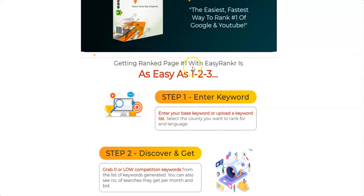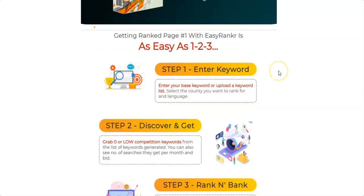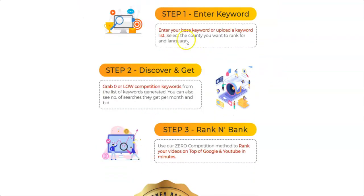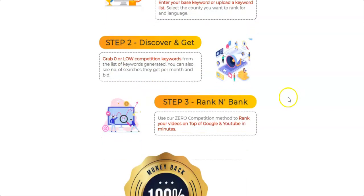Getting ranked on page one with EasyRanker is as easy as one, two, three. There are three steps. First, you enter your keywords, then you press the button, and EasyRanker will find all the keywords that have zero or low competition so that you can start ranking, getting views, and possibly making sales.